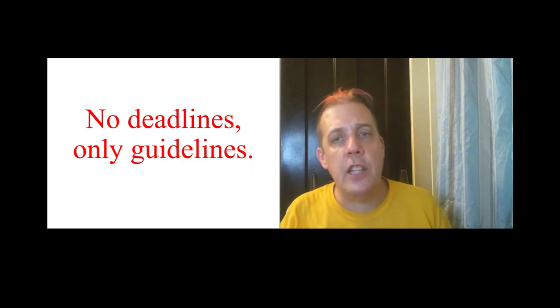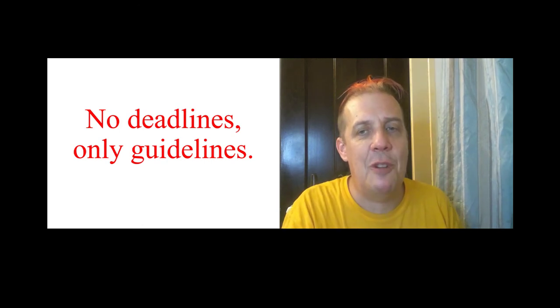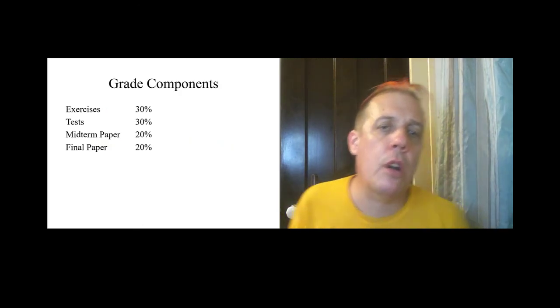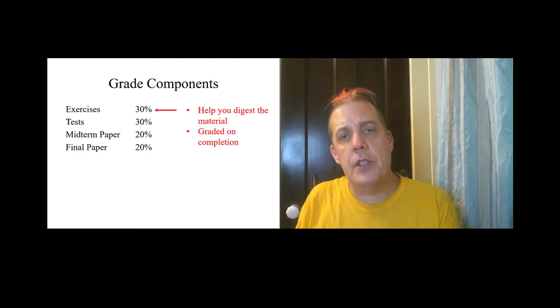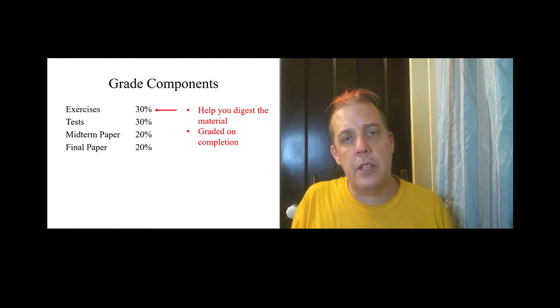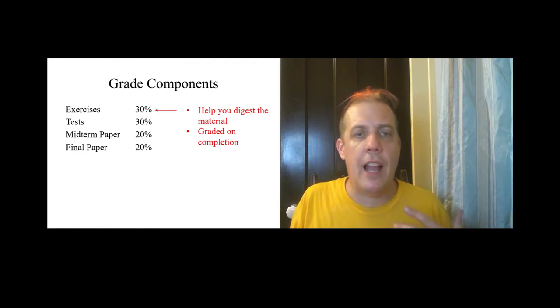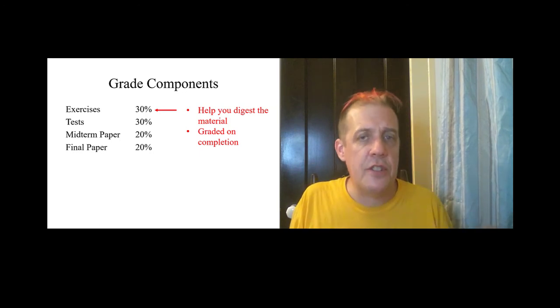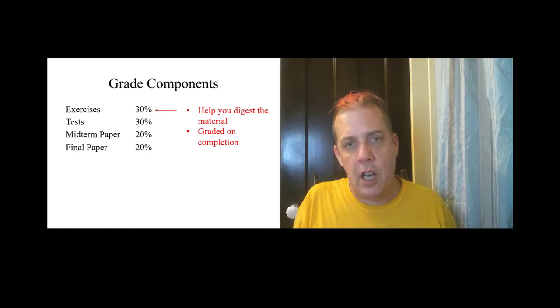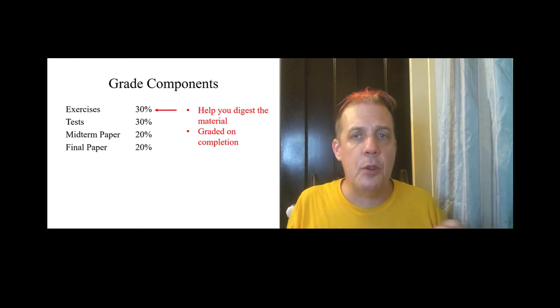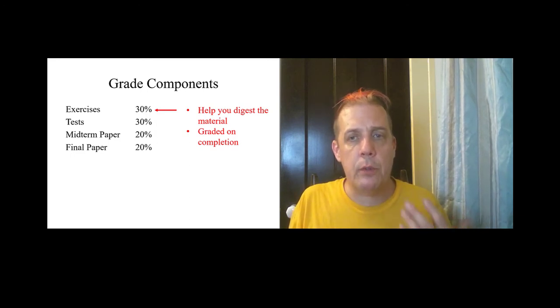No deadlines, only guidelines. So what do you have to do in those guidelines? There are four components to your grade: regular exercises, tests, a midterm paper, and a final paper. The exercises are there to help you digest the material, and these are just graded on completion. These will be things like writing prompts. I'll ask you what words you associate with justice, and you'll just need to write what your associations are. If you do it, you get 100 points. And if you don't do it, you get zero points. Your final grade is the average of those hundreds and those zeros. So this is really a chance for you to work through your ideas yourself.